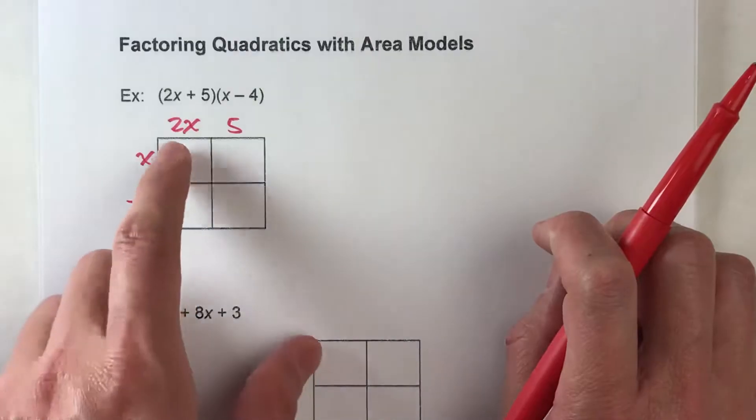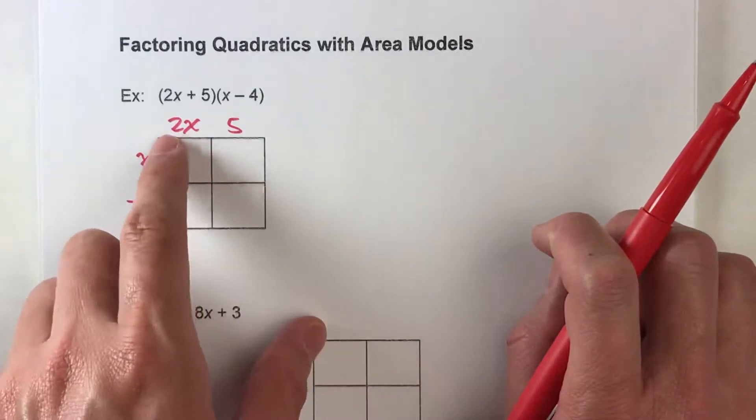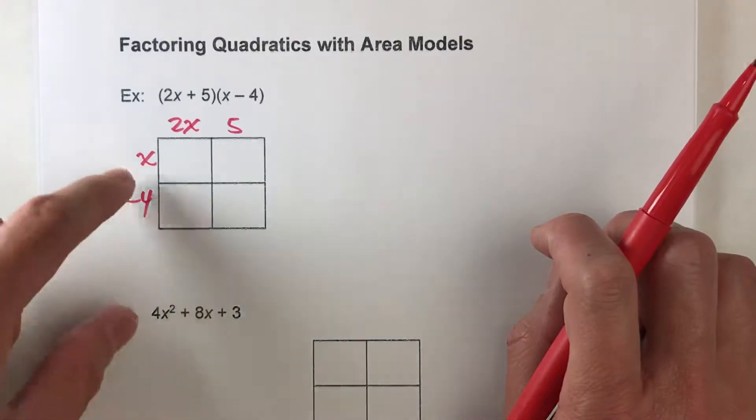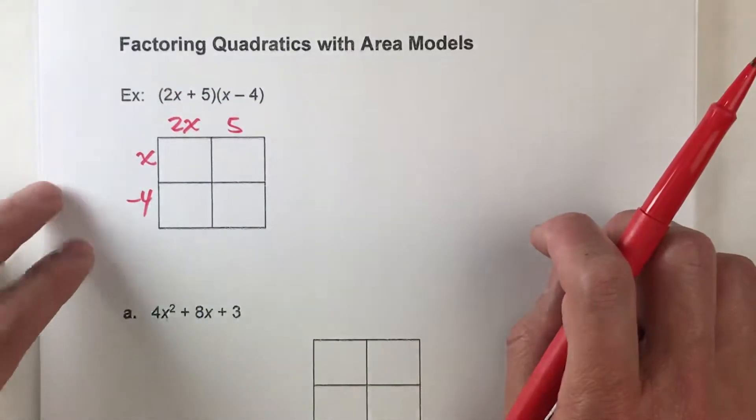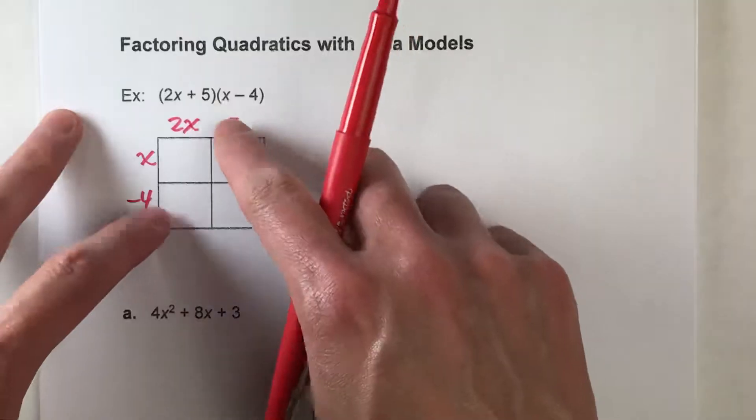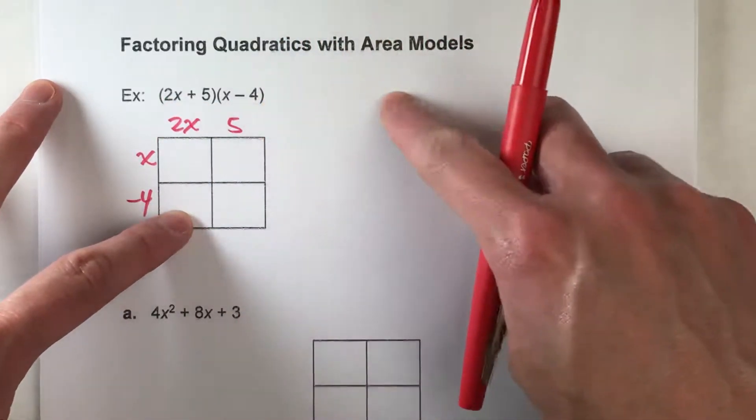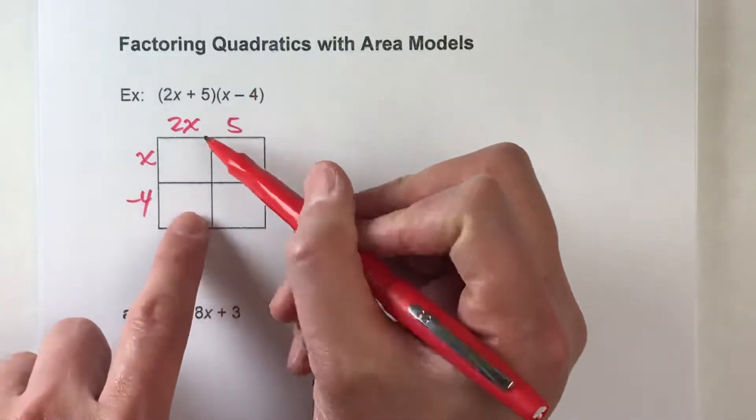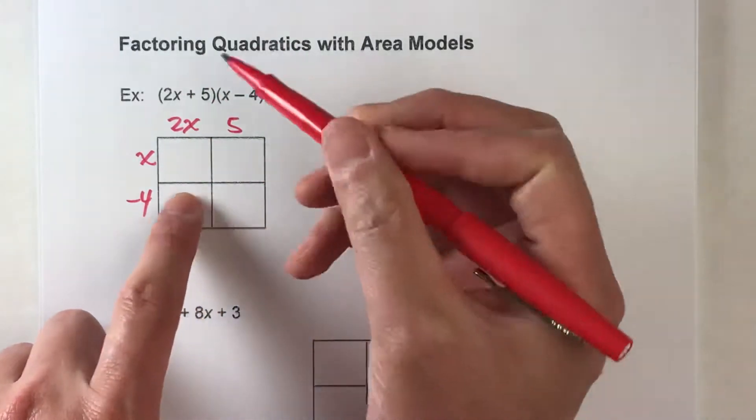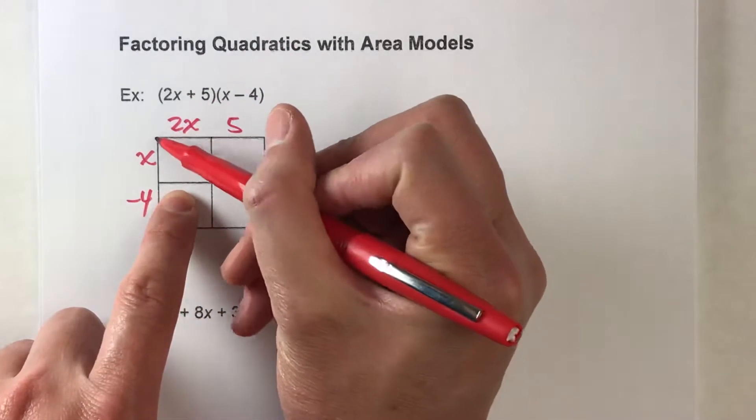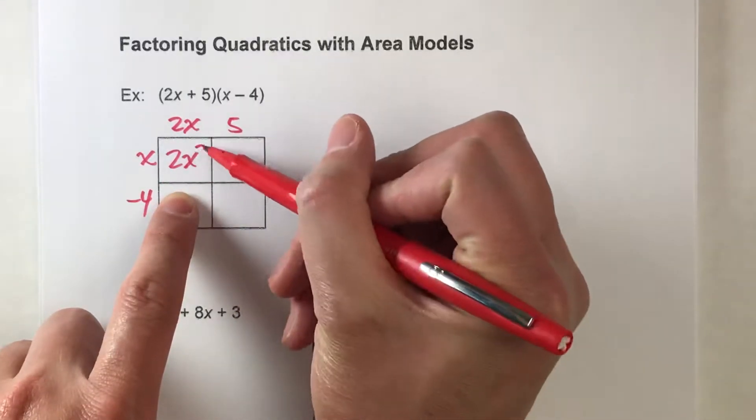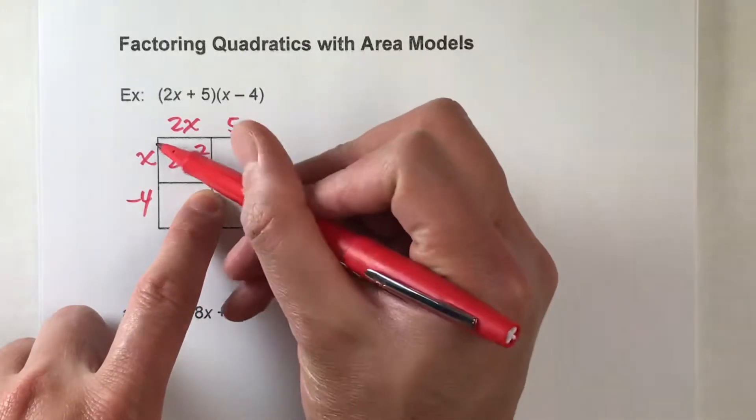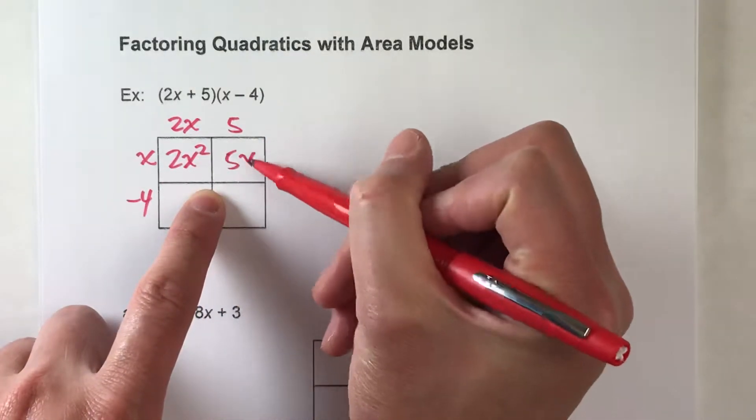So the area of this rectangle is 2x plus 5, which is the length, times x minus 4, which is the width. And to expand this out and get it into standard form expression, what we're going to do is just find the area of each of these boxes. So this box here is 2x times x, which is 2x squared. This box here is 5 times x. So this is 5x.